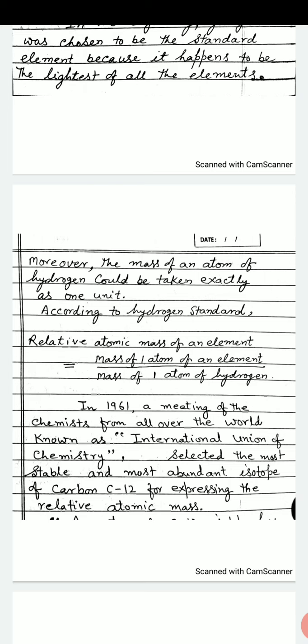In 1961, a meeting of the chemists from all over the world, known as International Union of Chemistry, selected the most stable and most abundant isotope of carbon C-12 for expressing the relative atomic mass.